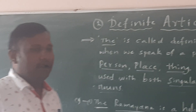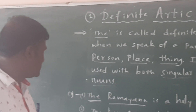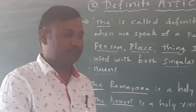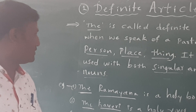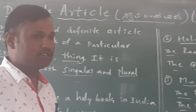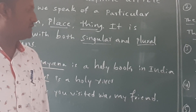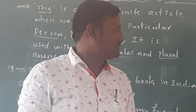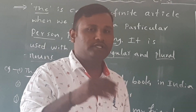So this is the definite article 'the'. There are so many rules; we discussed five rules here. First: before the universal truths. Second: holy books. Third: musical instruments. Fourth: names of seas. Fifth: names of oceans. In the next class, we will discuss other examples.